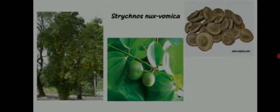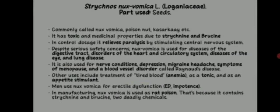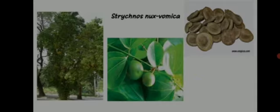Other uses include treatment of anemia, use as a tonic, and as an appetite stimulant. Men use nux vomica for erectile dysfunction and impotence. Nux vomica is also used as a rat poison because it contains strychnine and brucine, two deadly chemicals.